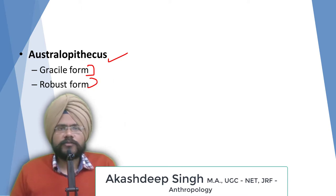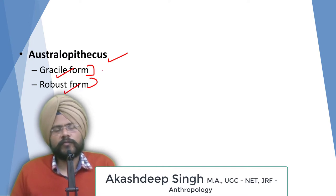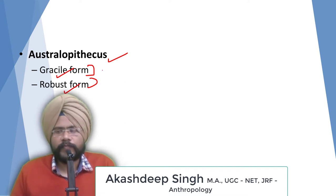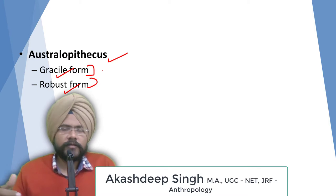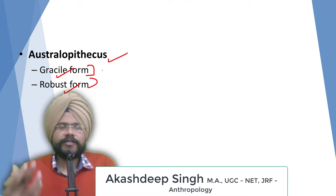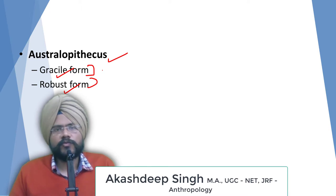You have two types of variants of Australopithecus: one is called the gracile form and the other is called the robustus form. The initial classification of Australopithecus is based on zoological factors.